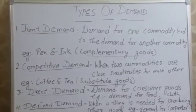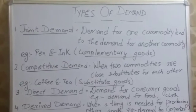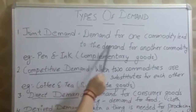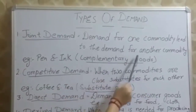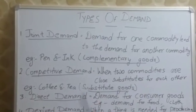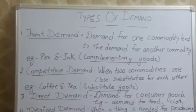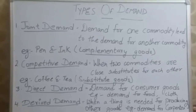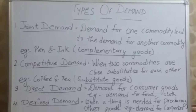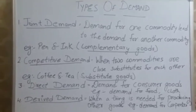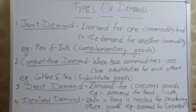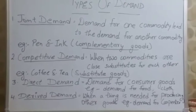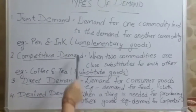Hello students. Today I will start with types of demand. The first one is joint demand — the demand for one commodity leads to demand for another commodity. Example: pen and ink. When we demand one commodity, we also need another. That is why we call it joint demand. In economics, these two goods demanded together are called complementary goods.